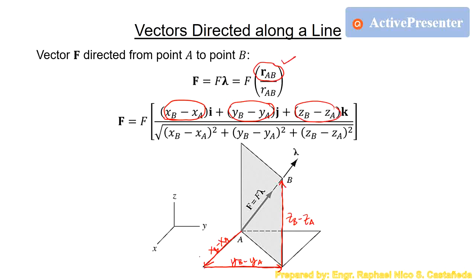I always use the concept of the triangle law, connecting the components in a head-to-tail manner to get the position vector R. That way I don't need to separately extract coordinates of the two points in space, because you can easily get the distance between these points directly from the given figure.